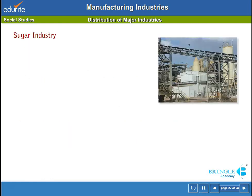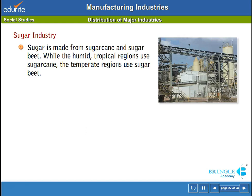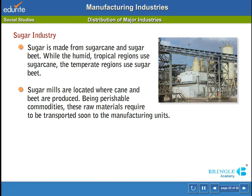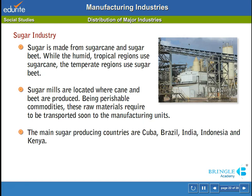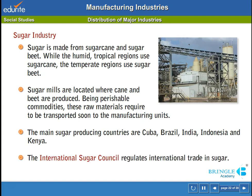Sugar industry: sugar is made from sugarcane and sugar beet. While the humid tropical regions use sugarcane, the temperate regions use sugar beet. Sugar mills are located where cane and beet are produced; being perishable commodities, these raw materials require to be transported soon to the manufacturing units. The main sugar-producing countries are Cuba, Brazil, India, Indonesia and Kenya. The International Sugar Council regulates international trade in sugar.